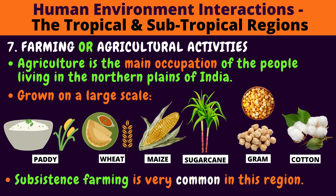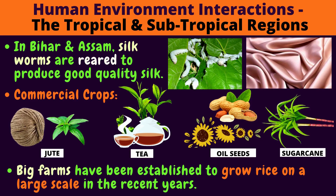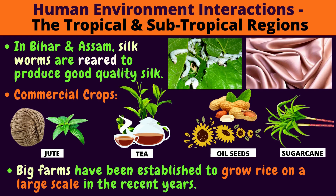Subsistence farming means growing crops for yourself — not to sell to others but for yourself. In Bihar and Assam, silkworms are reared to produce good quality silk. Look at the silkworms in the picture — the white silkworms. They are reared to produce good quality silk. Look at the silk material in the picture — the nice light pink. So soft!